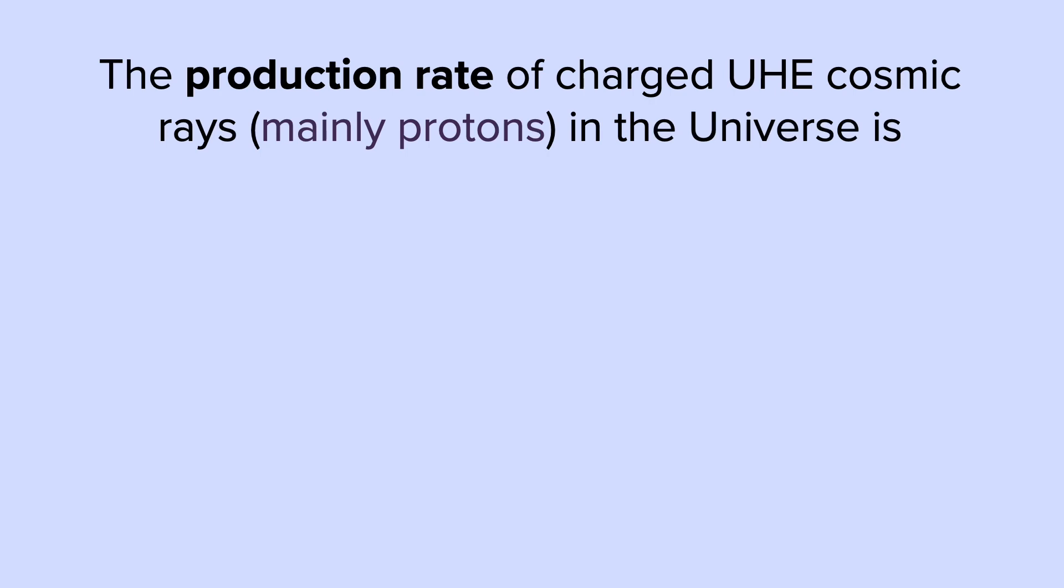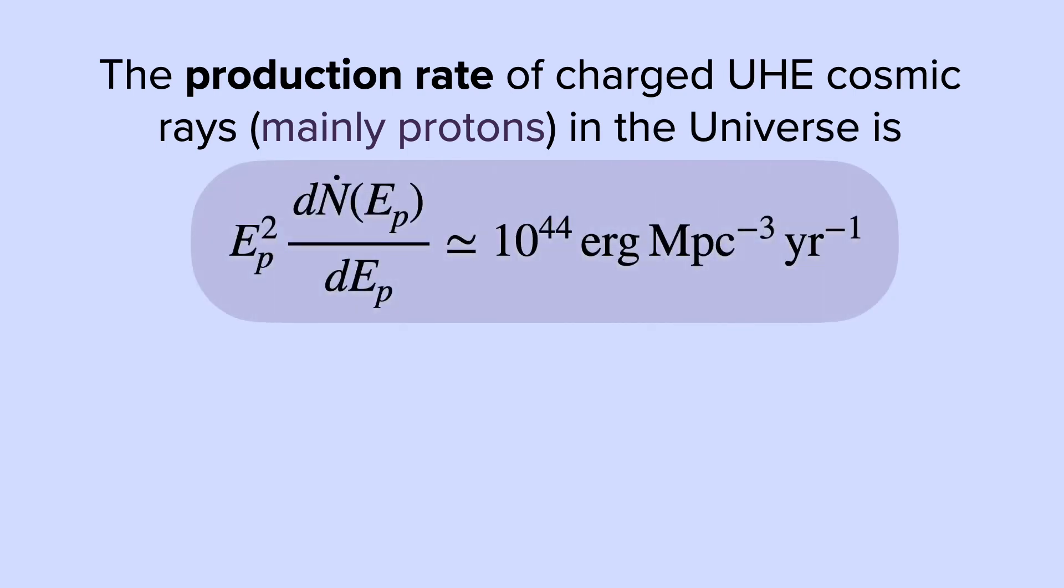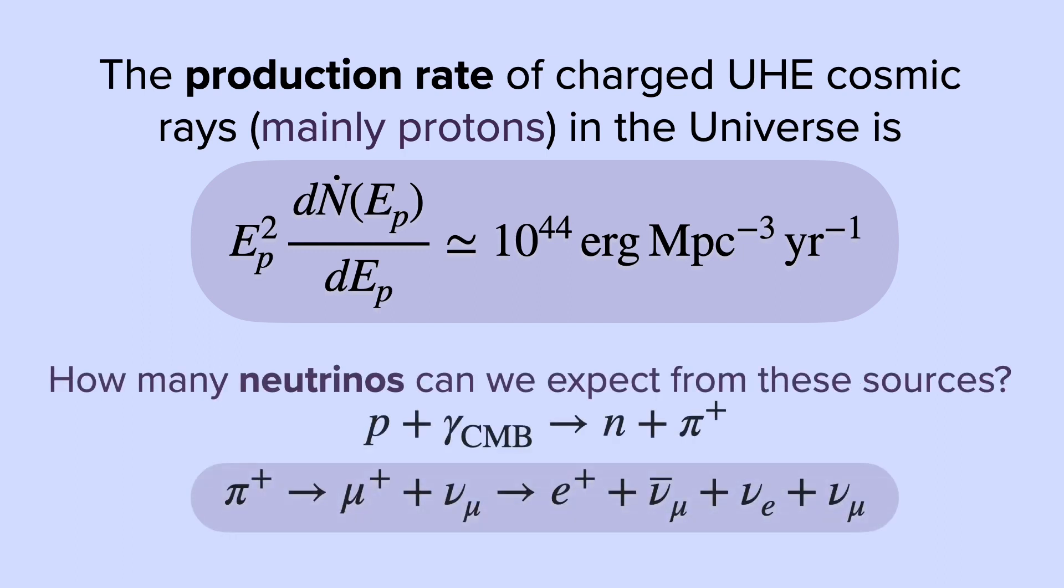Let's take a further look. The production rate of charged ultra-high-energy cosmic rays, mainly protons in the universe, can be defined as so. We want to ask ourselves, how many neutrinos can we expect from these sources? From photopion productions, we can see that the charged pions can also decay and produce neutrinos.